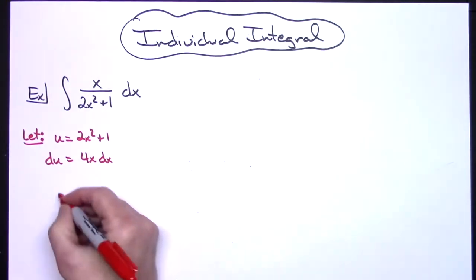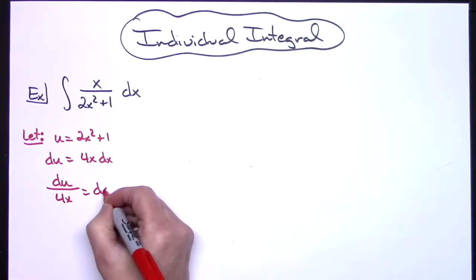I'm going to go ahead and solve all the way down for dx. So I have du over 4x equals dx.